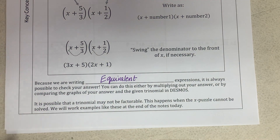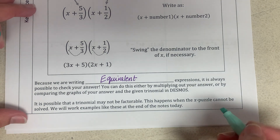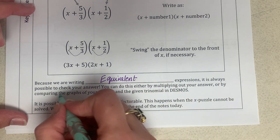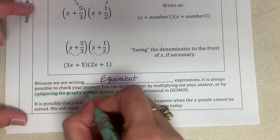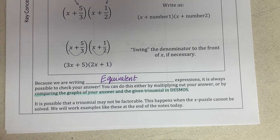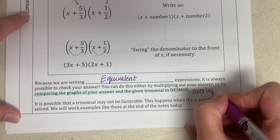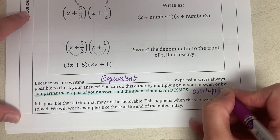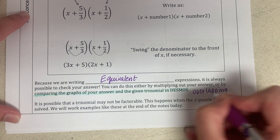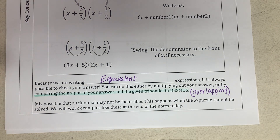It is always possible to check your answer. You can do this either by multiplying, or the easiest way would be to graph your equations in the decimals calculator — they should be overlapping or the same lines. That's another way of checking your answers.